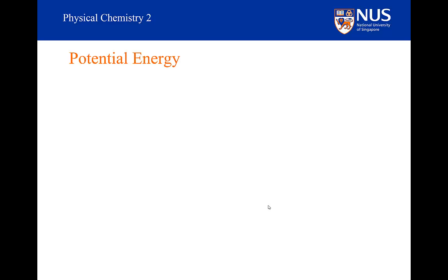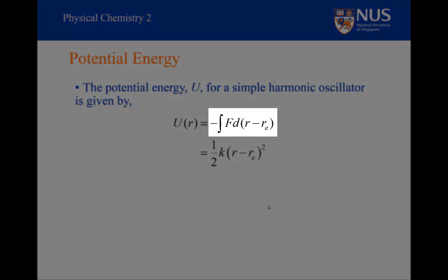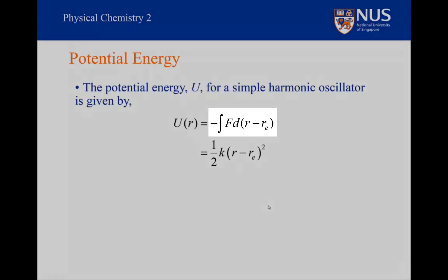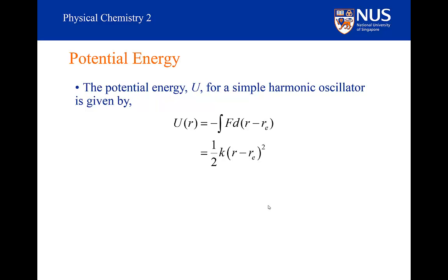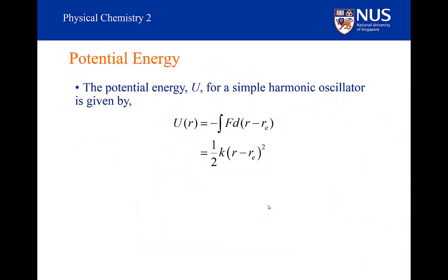What is the potential energy for a simple harmonic oscillator? Energy is equal to force times distance, but in this case our force depends on distance. So we need to integrate our force with respect to distance to get the total energy. The potential energy is equal to minus the integral of the force with respect to the distance from equilibrium. Substituting f equals minus k times (r minus r_e) and integrating gives half k times (r minus r_e) squared. You may have seen this as one-half kx squared, where x is the displacement from equilibrium — that is, x equals r minus r_e.